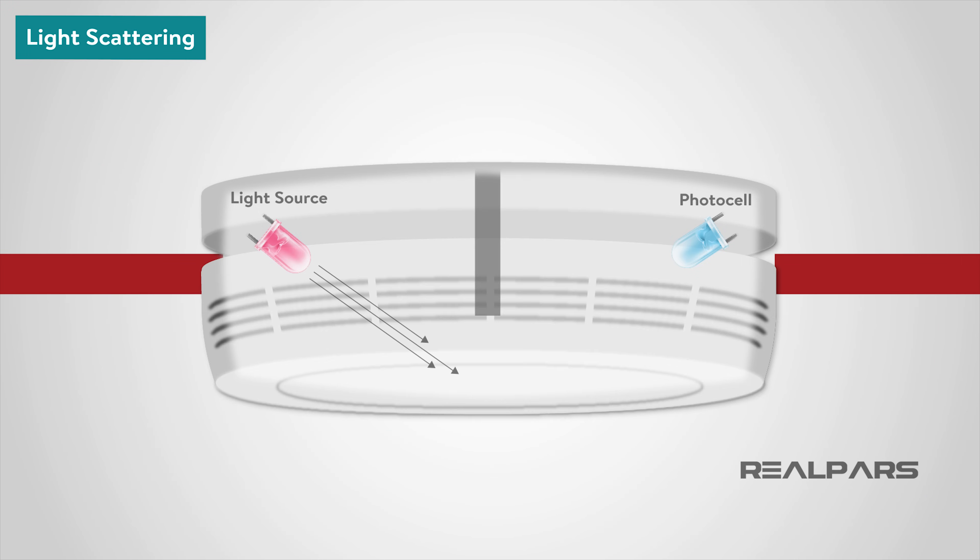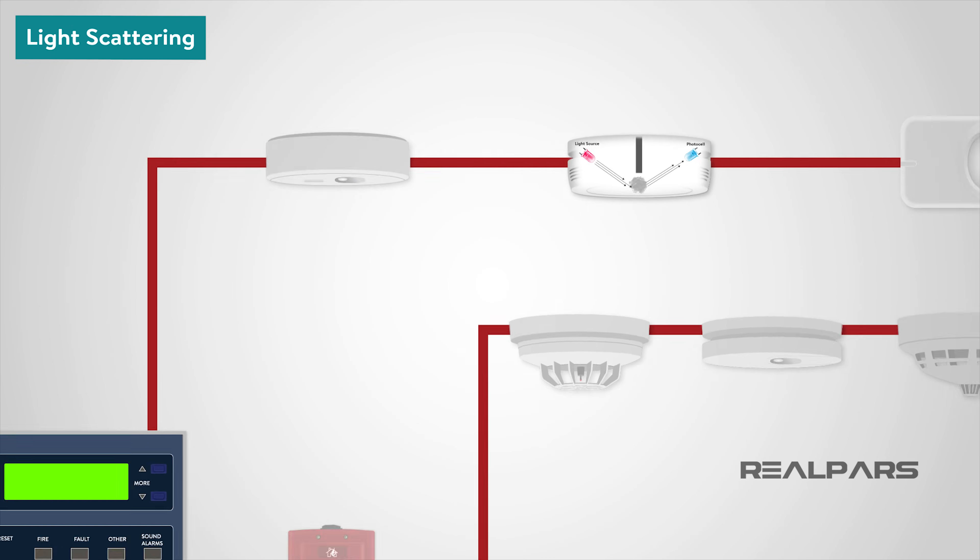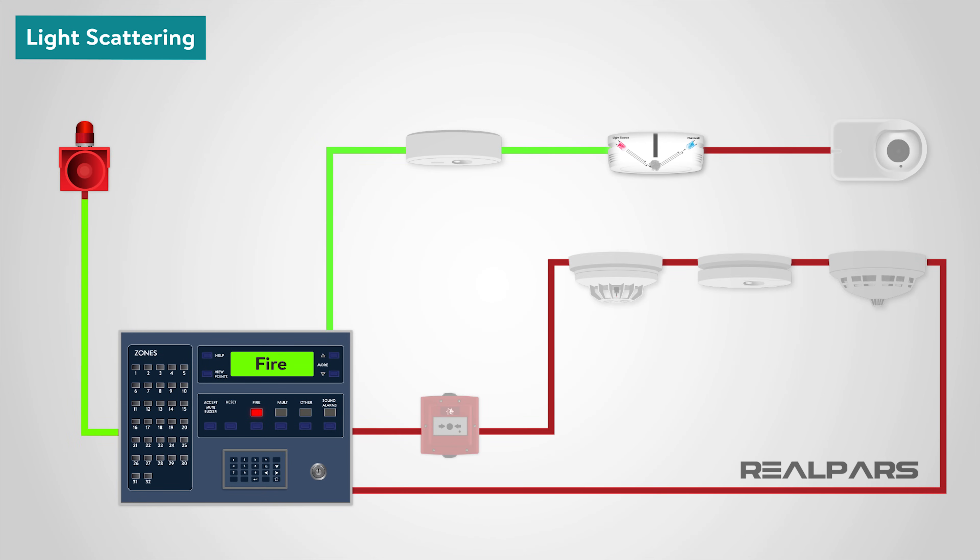The light scattering smoke detector operates on the Tyndall effect. A photocell and light source are separated from each other by a darkened chamber, such that the light source does not fall on the photocell. The passage of smoke into the chamber causes the light from the source to be scattered and fall on the photocell. The photocell output is being used to initiate an alarm.